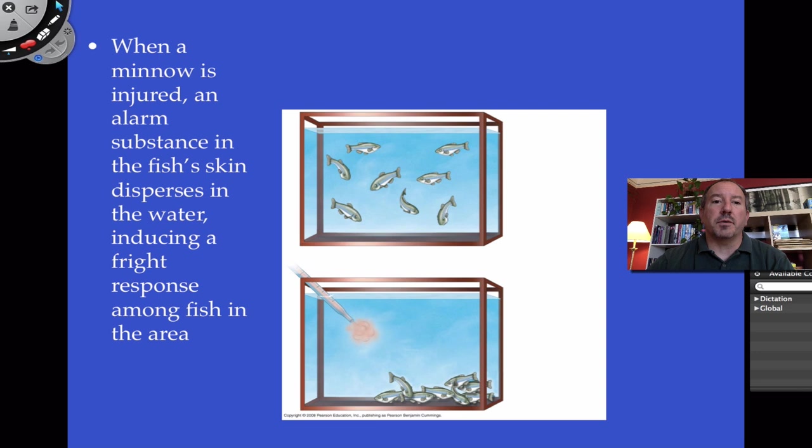If a minnow is being harmed in some way, it'll actually start to secrete a substance that diffuses in the water and causes a fright response where all the other minnows cower into the corner to avoid the harmful scenario. Since we've isolated this chemical, all you have to do is add a small quantity of this pheromone into the water and all the fish do that. It's kind of interesting.